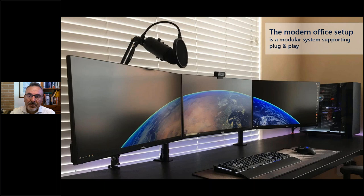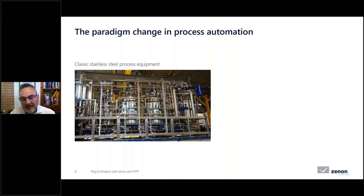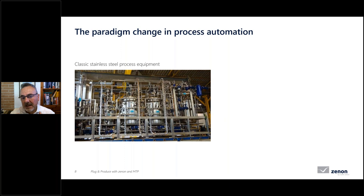If we move this plug-and-play example to process automation, we see classical stainless steel process equipment. From the automation point of view, we typically have a top-down engineering approach — a centralized system based on DCS, SCADA, and PLC where we connect equipment from a single control system, with fixed piping connections between different systems and vendor-dependent automation. Interoperability is not an easy task.